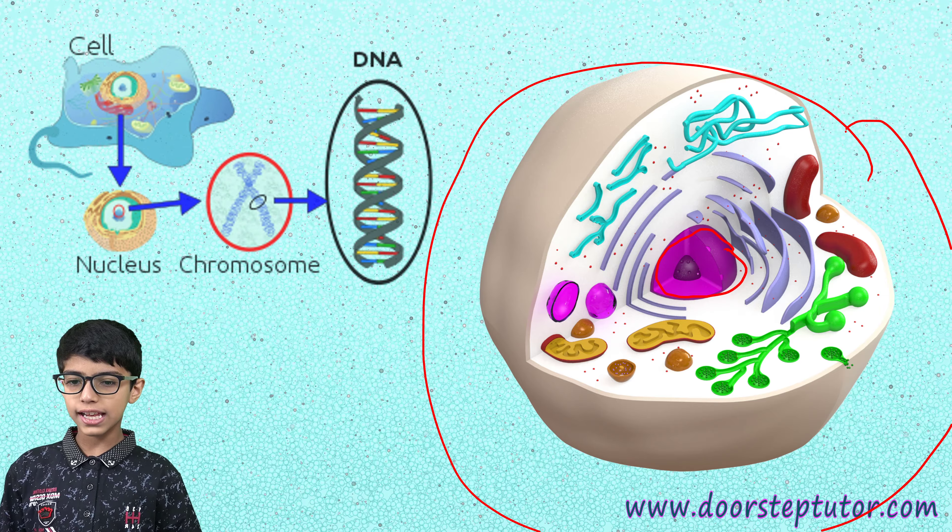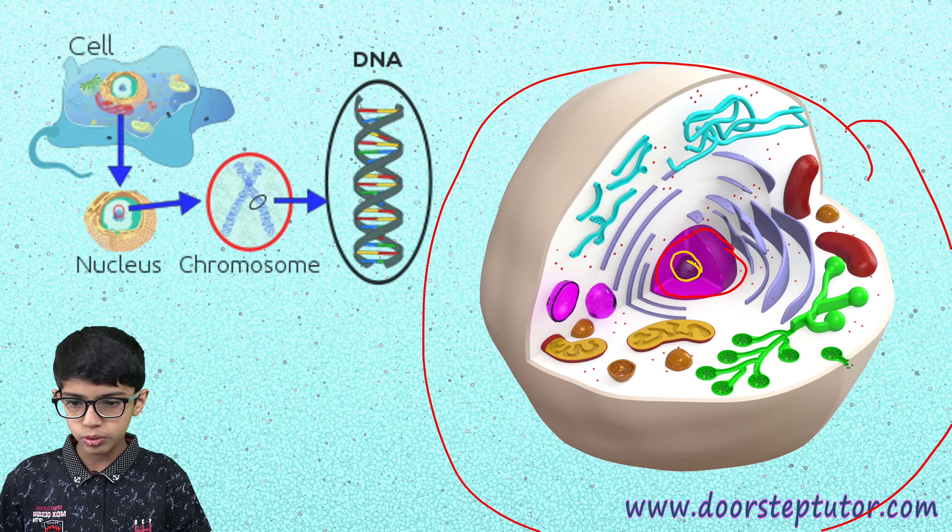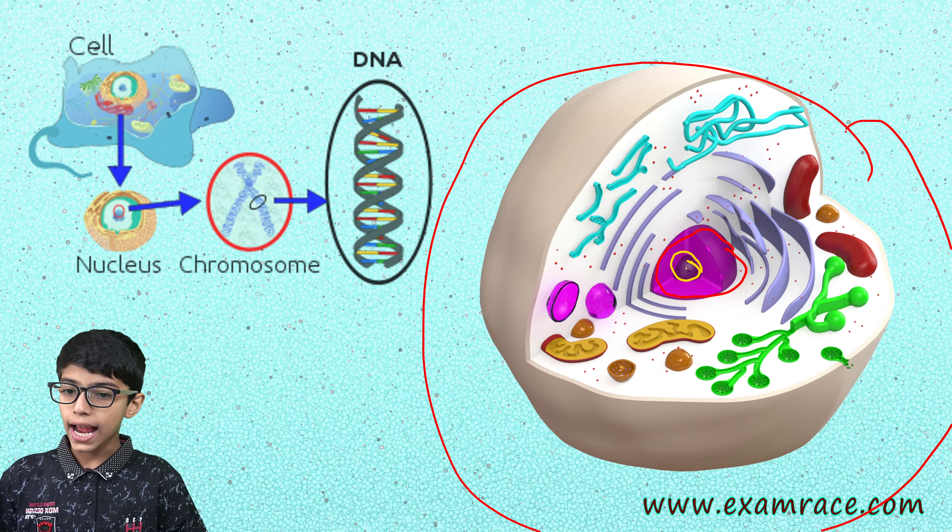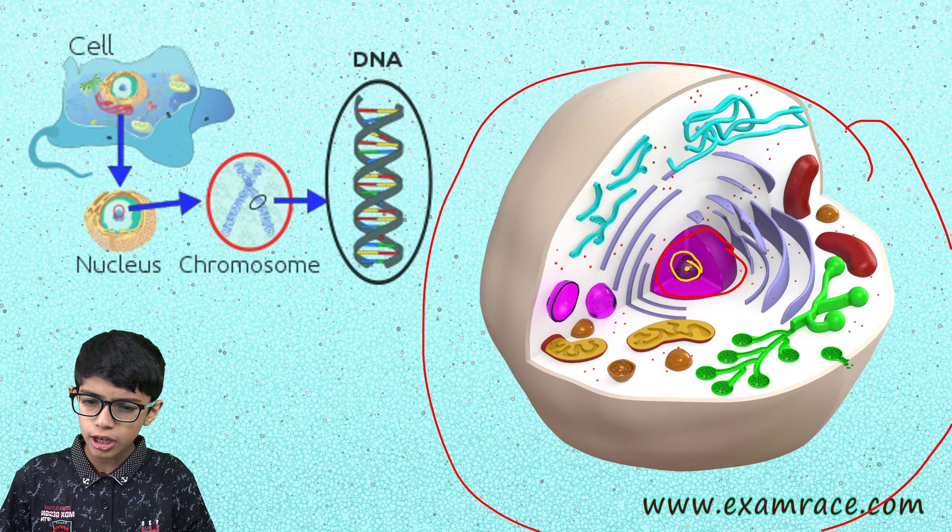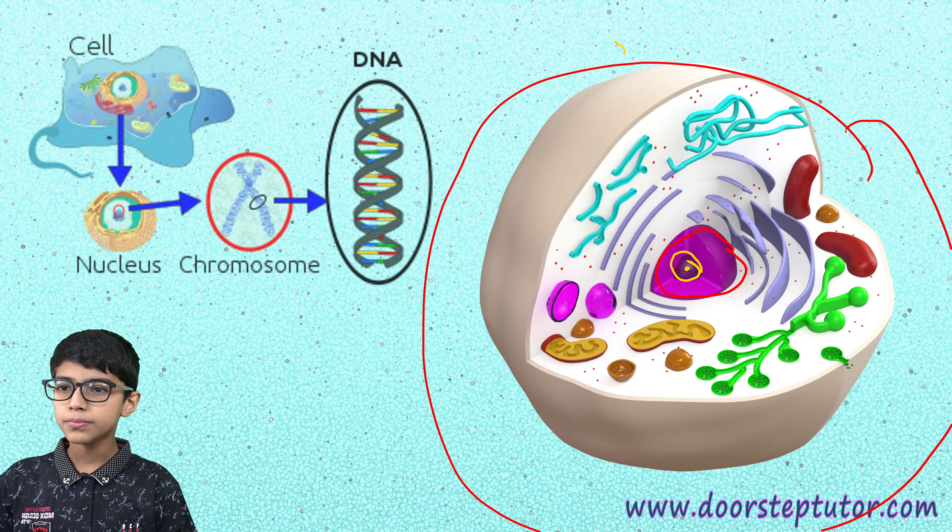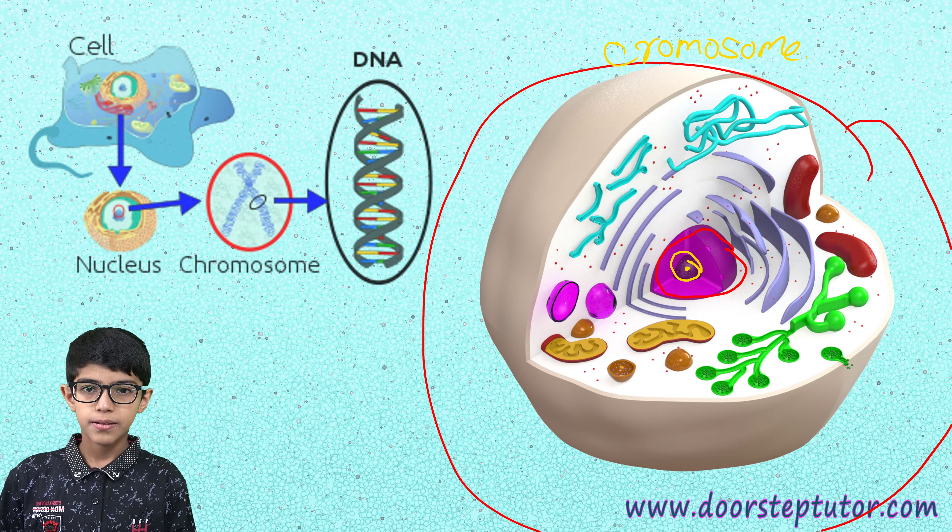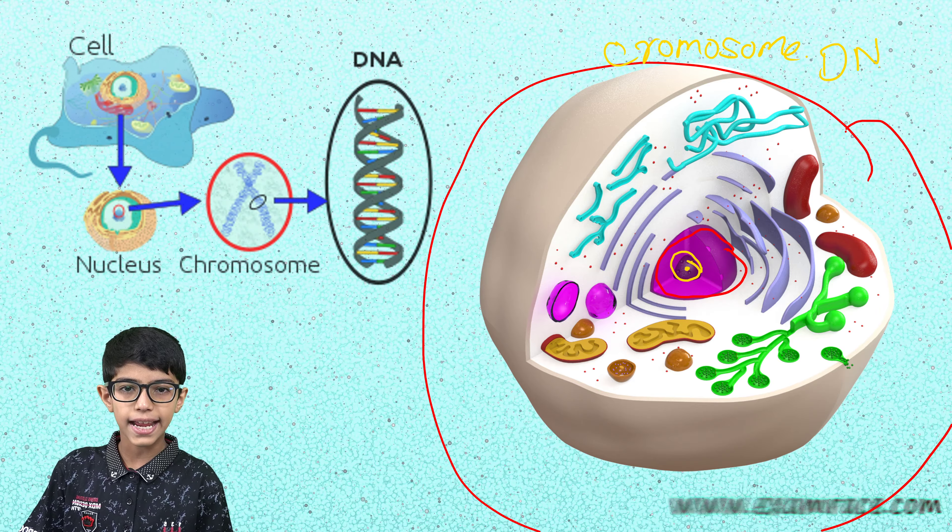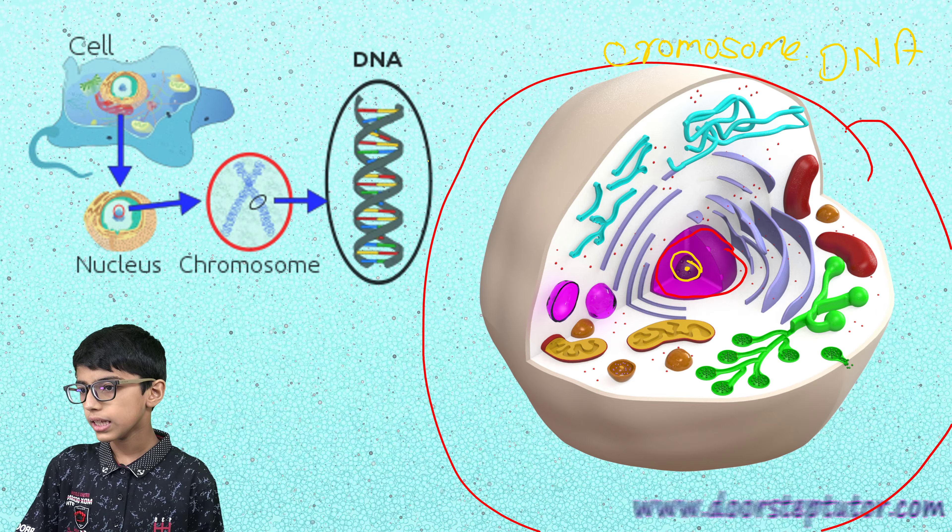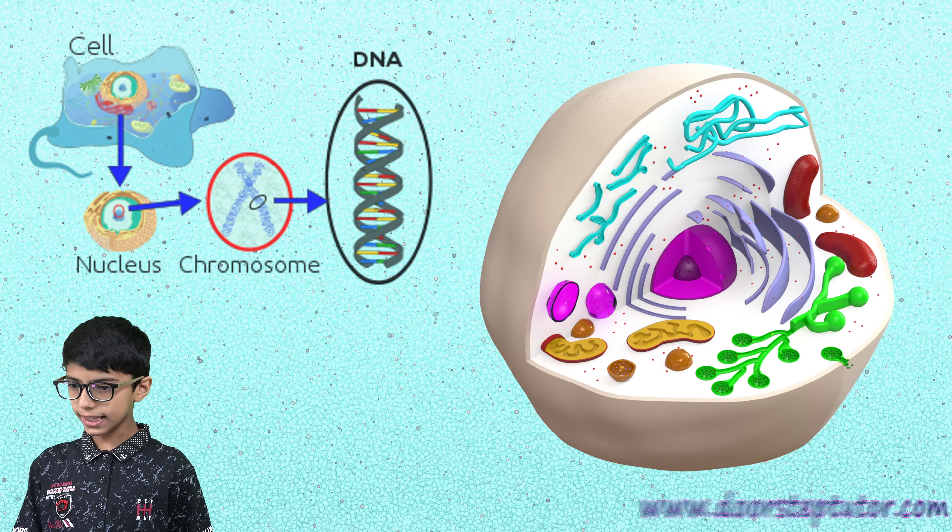We know that the nucleus is the brain of the cell. Inside the nucleus, there is nucleolus. And very small inside the nucleus, we have the chromosome. Now, this chromosome has the DNA. Can you see how small the DNA is?